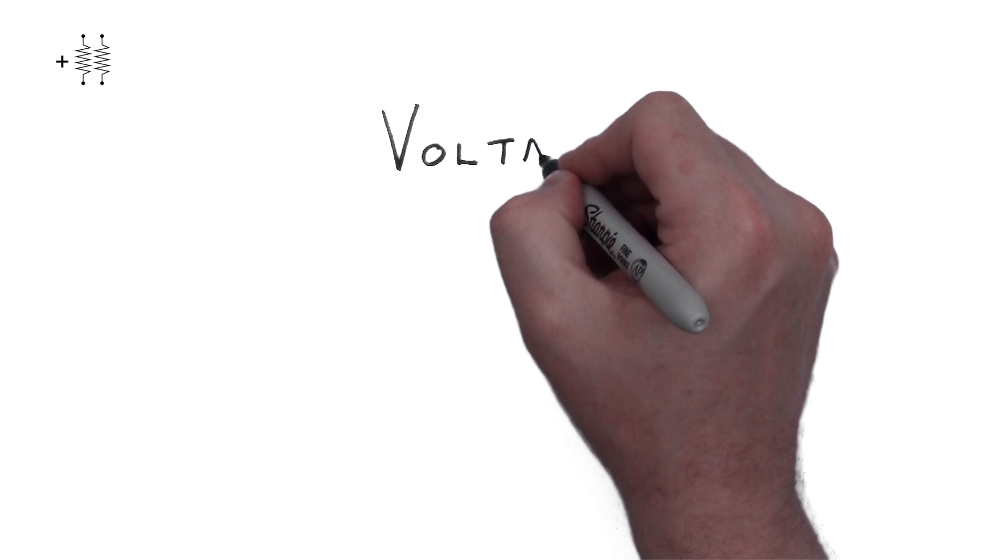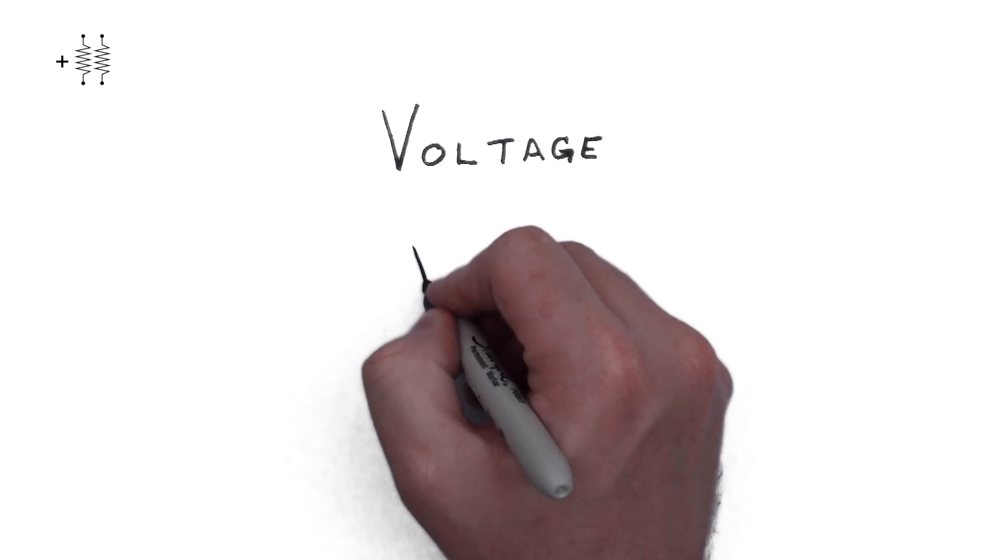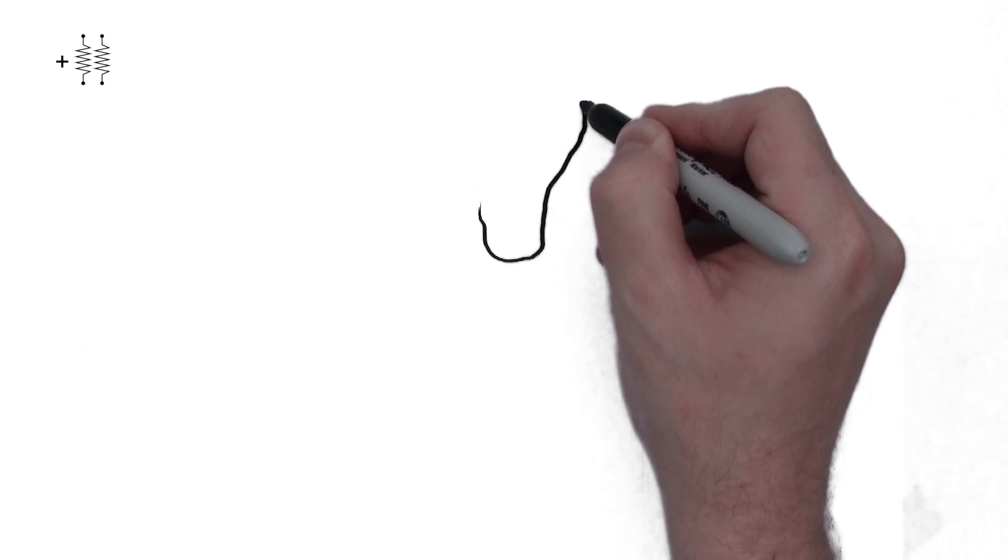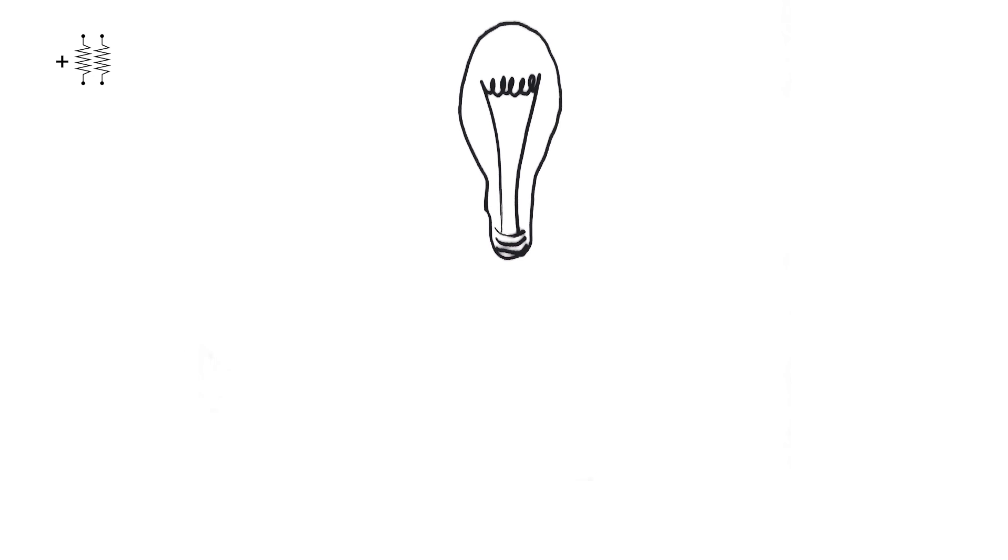We're first going to start by talking about voltage, which is measured in the incredibly creative term, volts. The technical definition of voltage has something to do with the tension between two points, which means it's all about pressure. So if we drew a light bulb like the one we're using, does this mean that pressure is like squeezing the light bulb? No, it actually means electrical pressure.